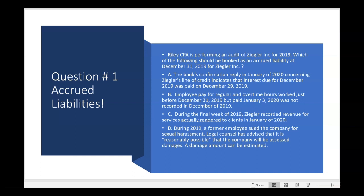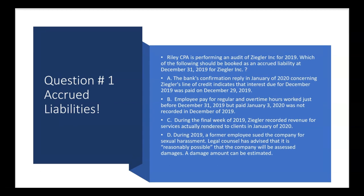It says Riley CPA is performing an audit of Ziegler Inc. for 2019. Which of the following should be booked as an accrued liability at December 31st, 2019? Letter A: the bank's confirmation reply in January of 2020 concerning Ziegler's line of credit indicates that interest due for December 2019 was paid on December 29th, 2019. So the company borrowed money and is paying interest on that line of credit back to the bank. The interest due for December was paid in December, so nothing is owed at year-end for this.